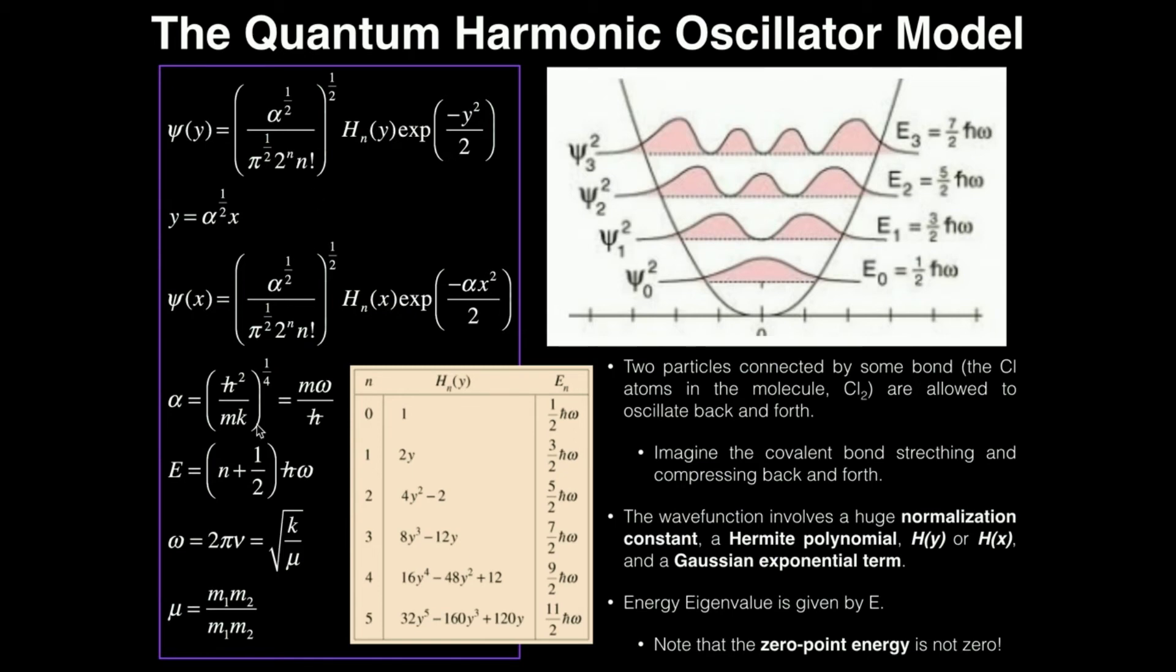Now, the other thing you want to know is your energy eigenvalue. So it turns out that for the harmonic oscillator, the energy is given by h-bar times omega. And then you multiply by this term n plus one half, where n is the same integer it was here, zero, one, two, three, and so forth. And you plug that in here, and that gives you the energy of oscillation.